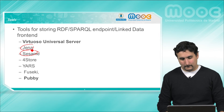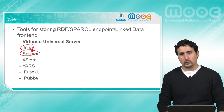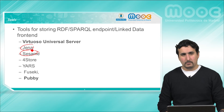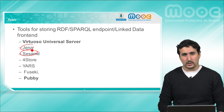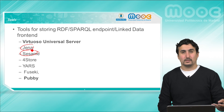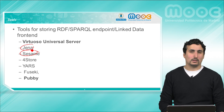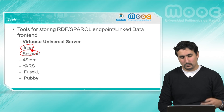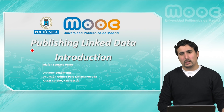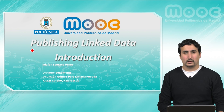Some of the most popular tools nowadays are Virtuoso Universal Server, which provides a database engine for storing our data on the web, and Pubby, for example, which works as a front-end providing a linked data interface over the standard SPARQL capabilities, providing thus some navigation features. In the following videos we will introduce the main vocabularies for publishing linked open data sets.